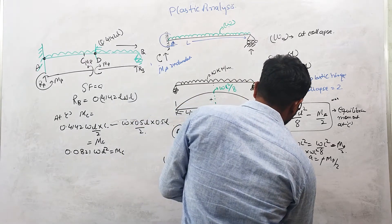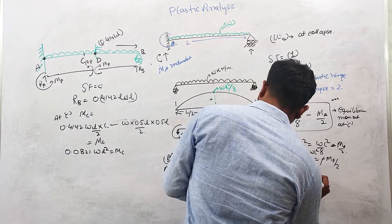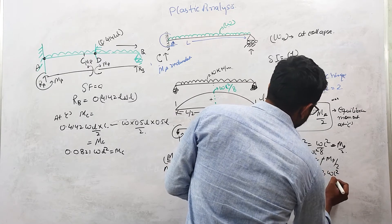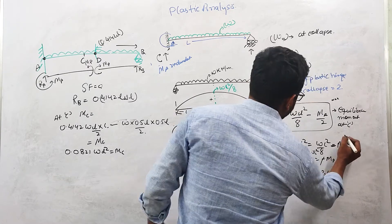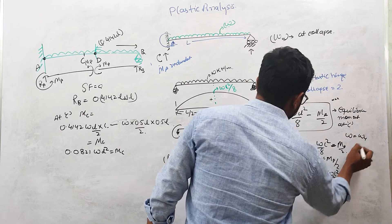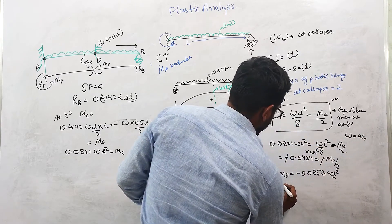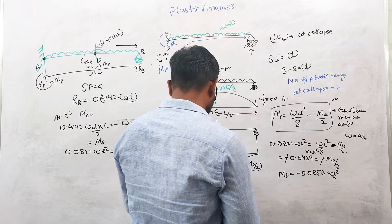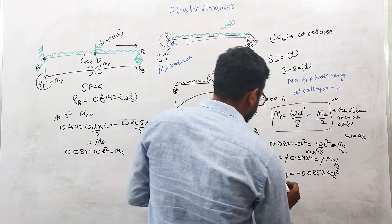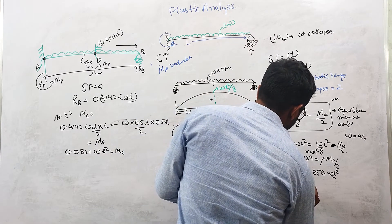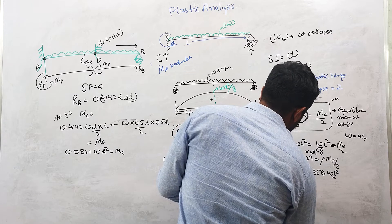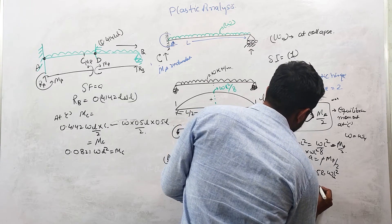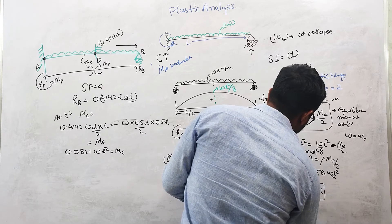Therefore, the collapse load WU = 11.65 MP / L². This is the value of the collapse load after the mechanism condition is satisfied.